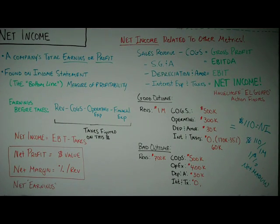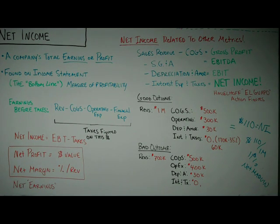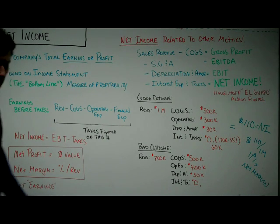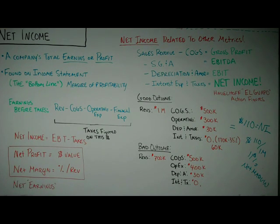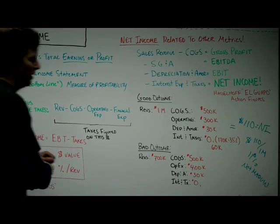Net income is one of the most commonly used and talked about financial metrics. You'll find it on the income statement for a company. It's important to understand because it's in relation to a whole bunch of other metrics, and it's used to judge profitability and the relative health of a company.